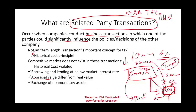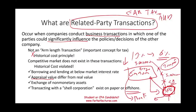Related party transaction risks can also appear in exchanges of non-monetary assets, such as exchanging a truck for another truck where the transaction is not arm-length. It can also involve transactions with shell corporations — companies that exist only on paper or are offshore in tax havens, where no one knows who the true owners are. This is the core risk with related party transactions.